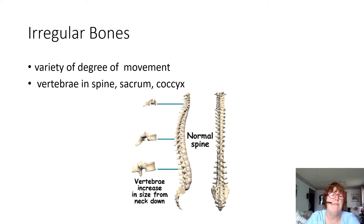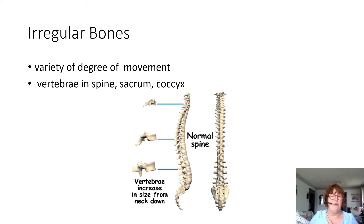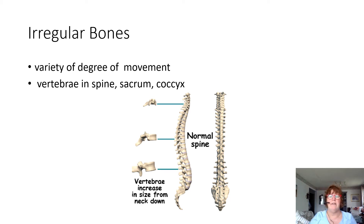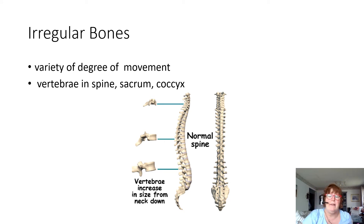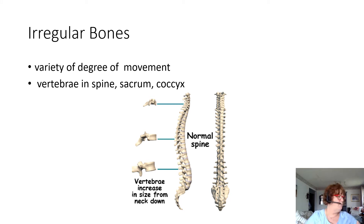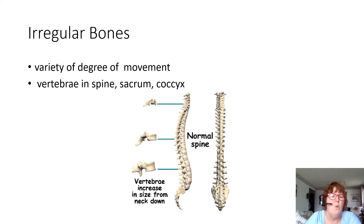Irregular bones are in the vertebrae and the spine — the sacrum and the coccyx, which is our tailbone. The sacrum is basically above our coccyx, and then we have our vertebrae. It allows us degrees of movement; that's how we can turn like this. We need those wonderful irregular bones.